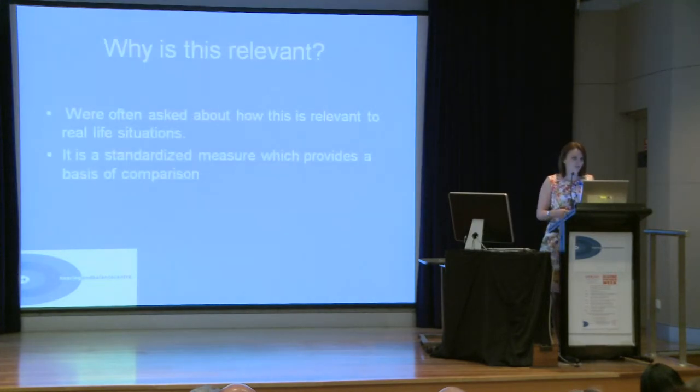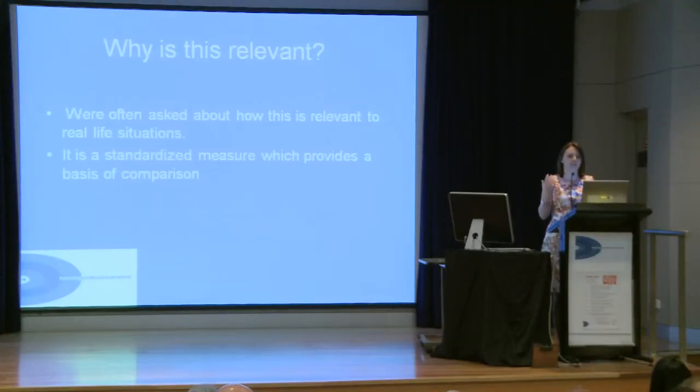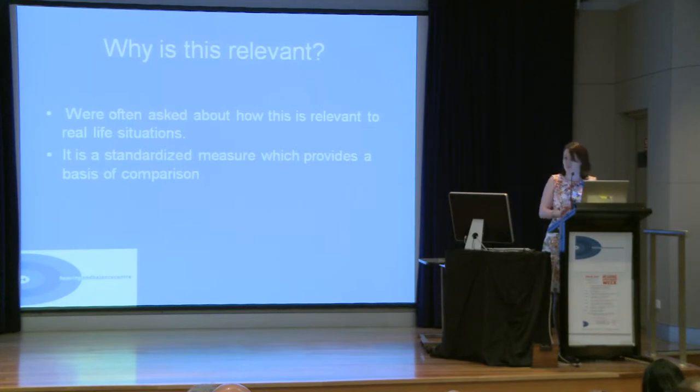The reason we do an audiogram — because sometimes we're asked exactly why this is relevant to real-life situations — is that it gives us a comparative and standardised measure of hearing. Particular shapes of hearing loss give us an idea of what sounds you're missing and the implications of that hearing loss. For example, we know that if you're missing the high-pitched tones, often you'll be fine one-on-one, but you might have more difficulty in challenging situations with some distance or a lot of background noise.